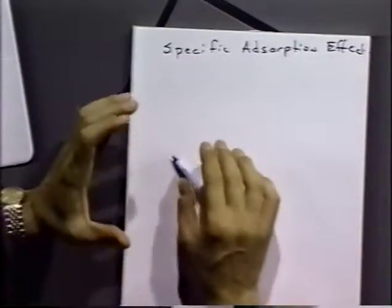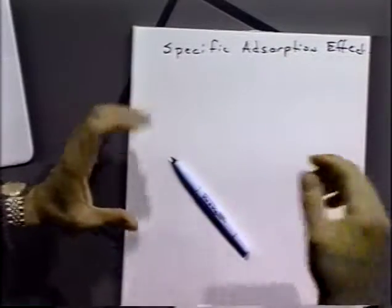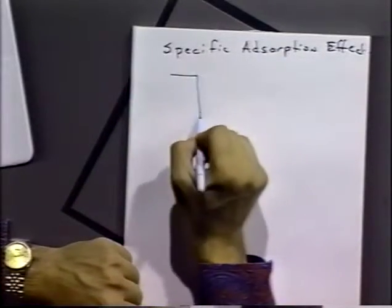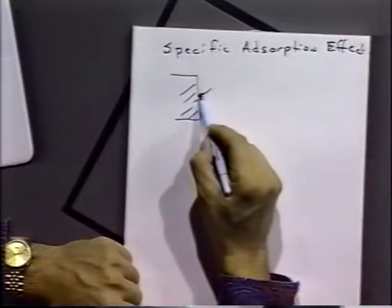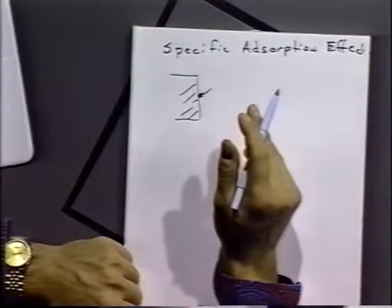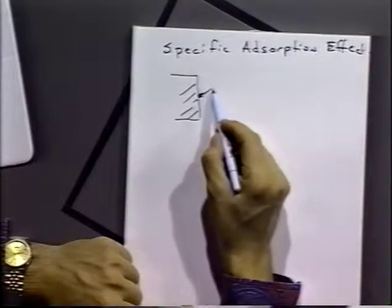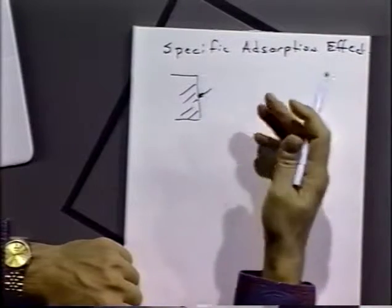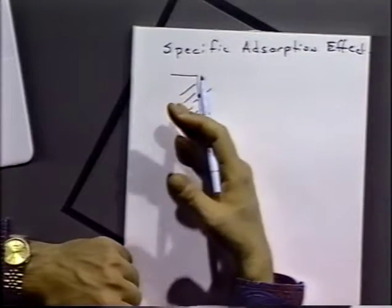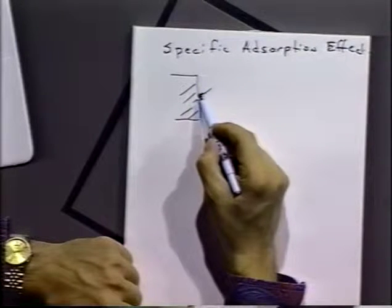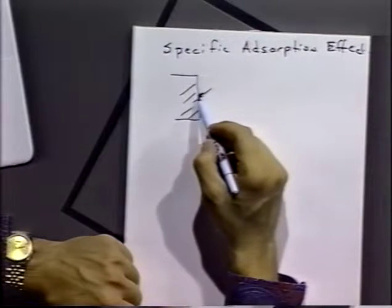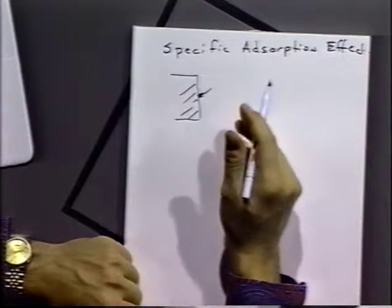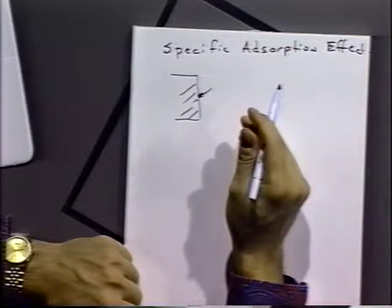A molecule or ion can approach a metal electrode and become specifically adsorbed onto that surface, stuck onto it somehow. There is not only an active process, but there has to be a transport of material to the electrode surface. There's an energy cost or gain by adsorbing onto that electrode surface that has to be considered, and there is a limit to how much material can be adsorbed on the electrode surface.